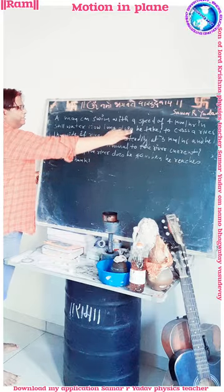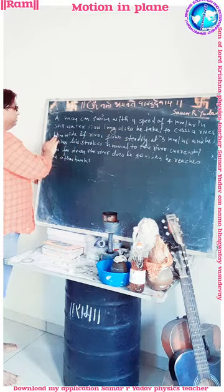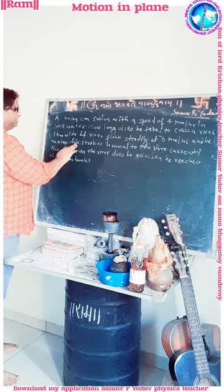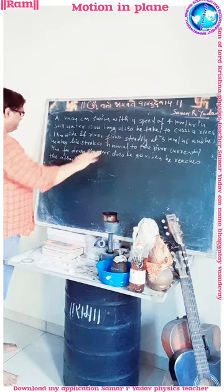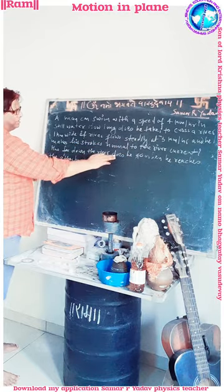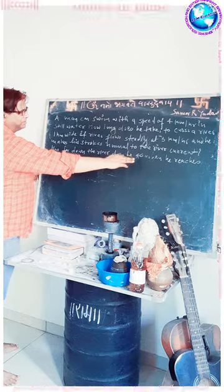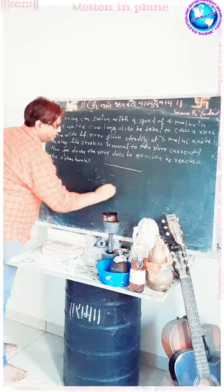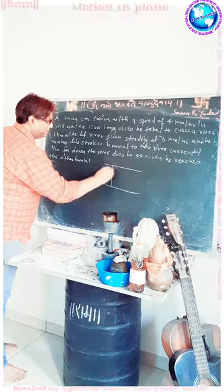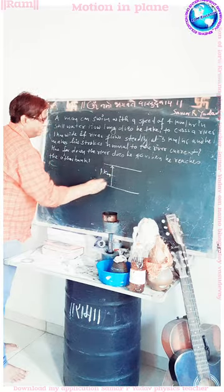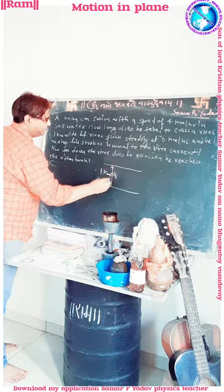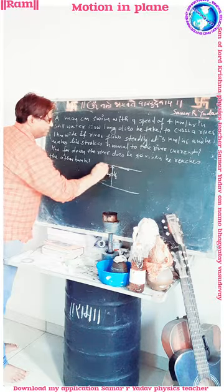How long does he take to cross a river 1 km wide, if the river flows steadily at 3 km per hour and he makes his strokes normal to the river current? How far down the river does he go when he reaches the other end? This is the river of width 1 km.